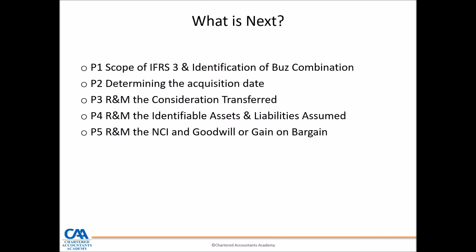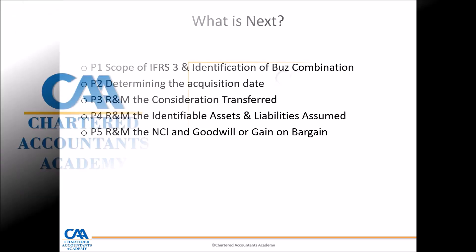After this introduction, presentation one will look at the scope of IFRS3 and the identification of business combinations. Presentation two will determine the acquisition date. Presentation three covers recognizing and measuring the consideration transferred. Presentation four covers recognizing and measuring the identifiable assets and liabilities assumed. The final presentation five will cover recognizing the non-controlling interest, goodwill, and gain on a bargain purchase. Thank you.